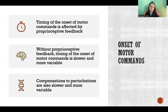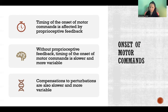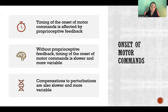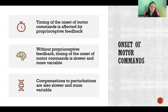Compensations to perturbations are also slower and more variable. If there's a disturbance in movement — for example, stepping on a patch of ice unexpectedly — that's a disruption in the motor pattern being executed. We use proprioceptive feedback to detect that perturbation, identify what is different from what we planned, send that feedback to the control center, update the motor plan, and send it back out to the effectors — the muscles.